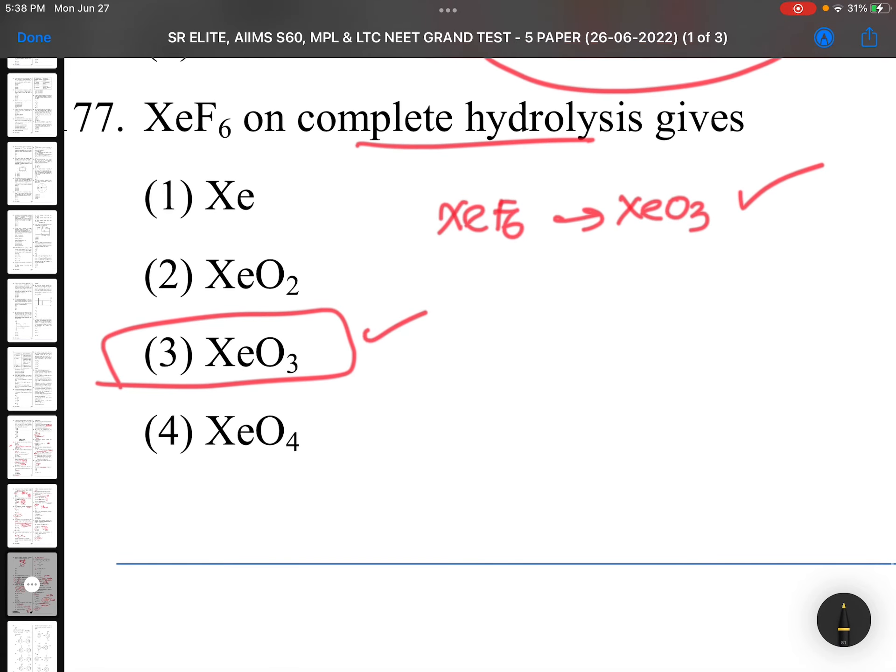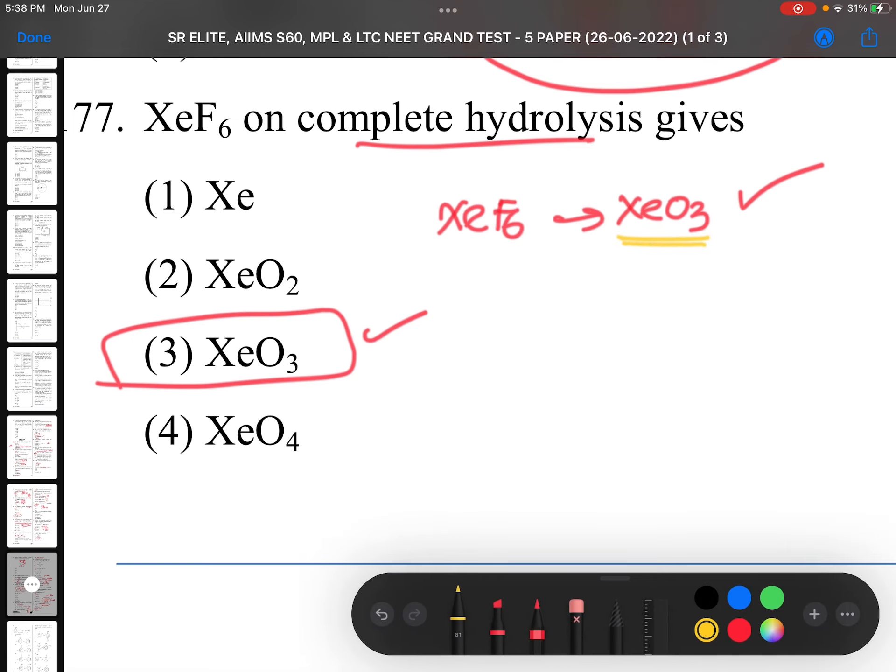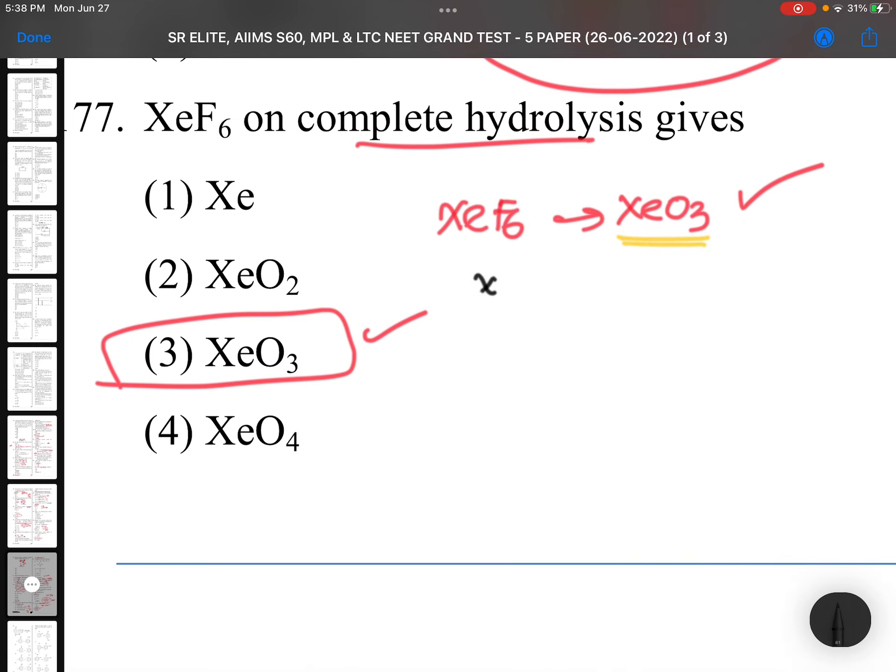Question 177: XeF6 on complete hydrolysis gives XeO3. This is complete hydrolysis product. If you want partial hydrolysis, XeF6 can give you XeO2F2 or XeOF4. These are partial hydrolysis products.